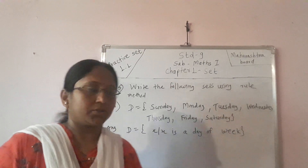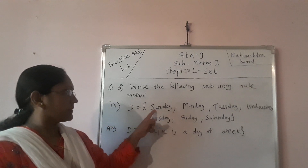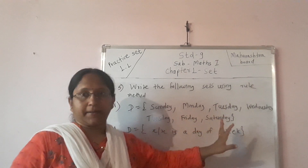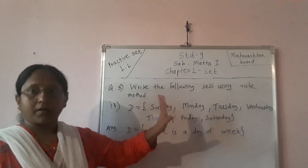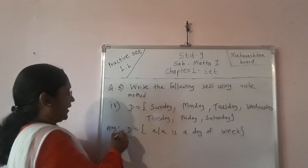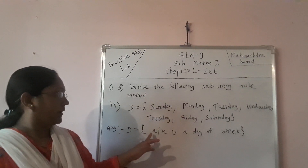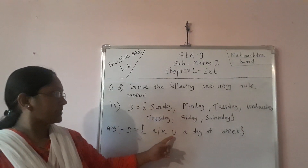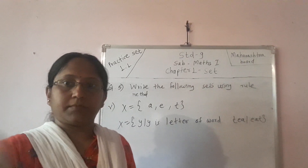Next sub-question: one set is given — D = {Sunday, Monday, Tuesday, Wednesday, Saturday}. That means it is all days from a week. So in rule method, we write: D = {x | x is a day of the week}.